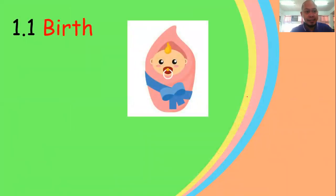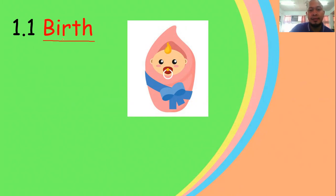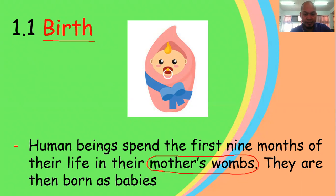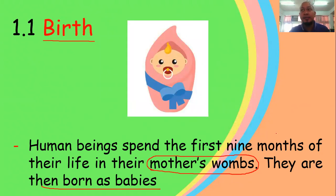Now let's discuss each stage one by one. The first cycle is birth. This is the time our mother gives birth to us — that is our birthday. Human beings spend the first nine months of their life in their mother's womb. After nine months, they are then born as babies.